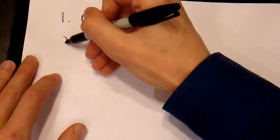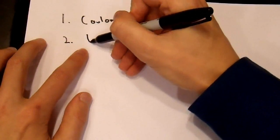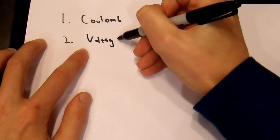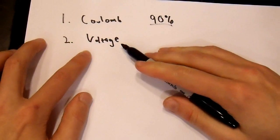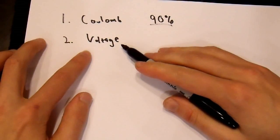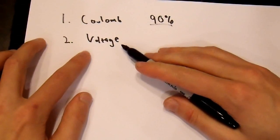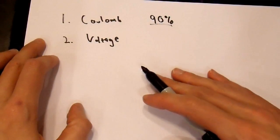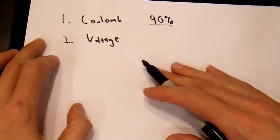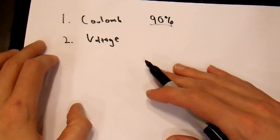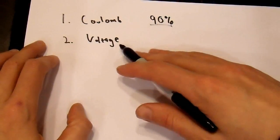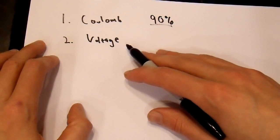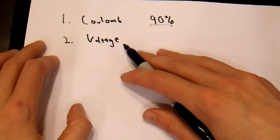Second is voltage efficiency. And this is a pretty simple concept. Anybody who is familiar with Ohm's Law — volts, watts, amps, ohms — this is pretty easy to understand. Because what happens when you discharge a battery?